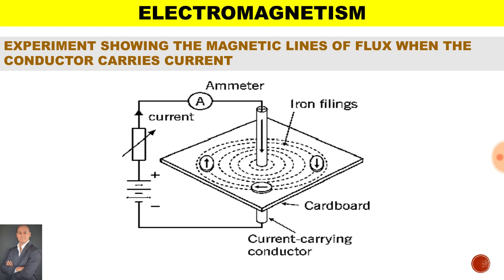Here is an experiment showing the magnetic lines of flux when the conductor carries current. Using a piece of cardboard with some iron filings, we have a DC battery source and a potentiometer. Our ammeter is connected in series with the load. When current passes through the conductor, the lines of flux will align themselves to the lines of magnetic flux.